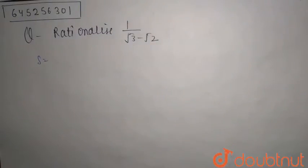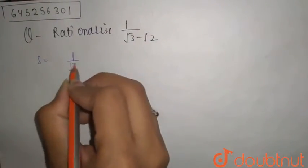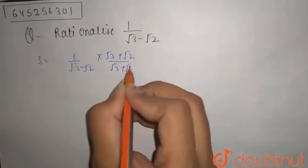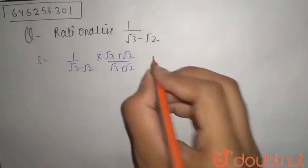So this will be 1 by root 3 minus root 2 times root 3 plus root 2 divided by root 3 plus root 2. This is what we call rationalization. When you multiply it will be root 3 plus root 2 as it is.